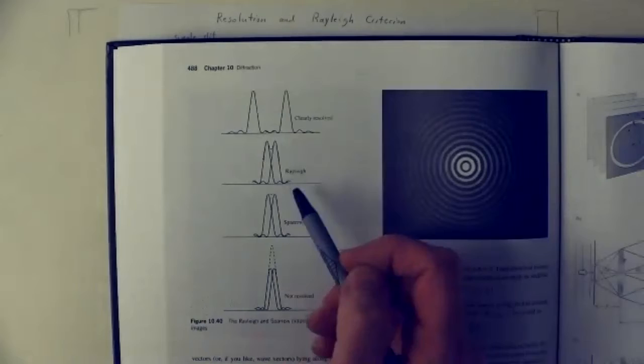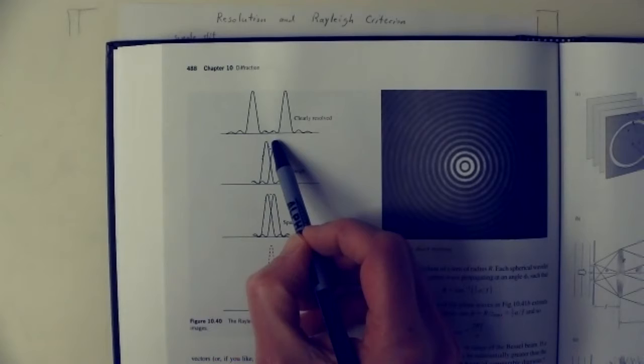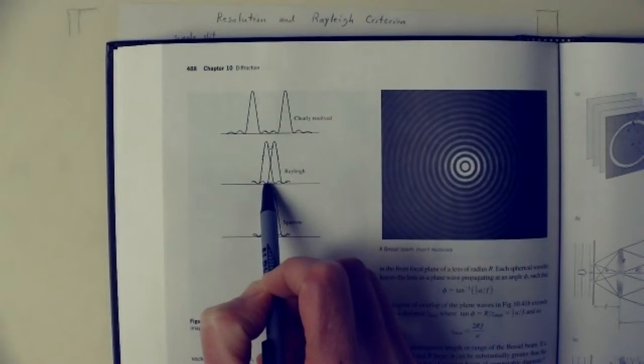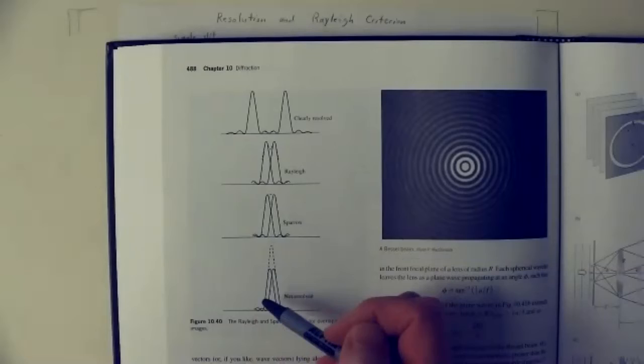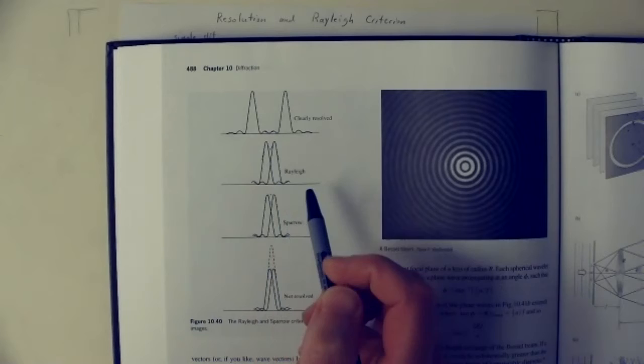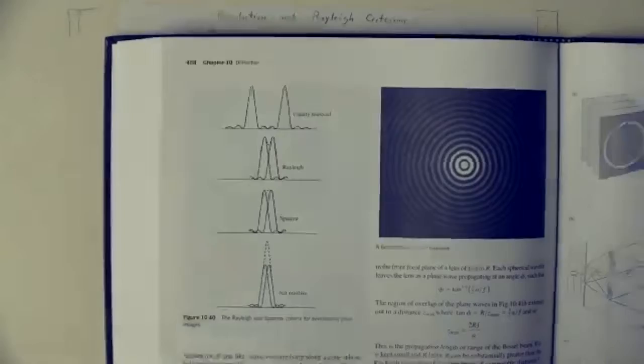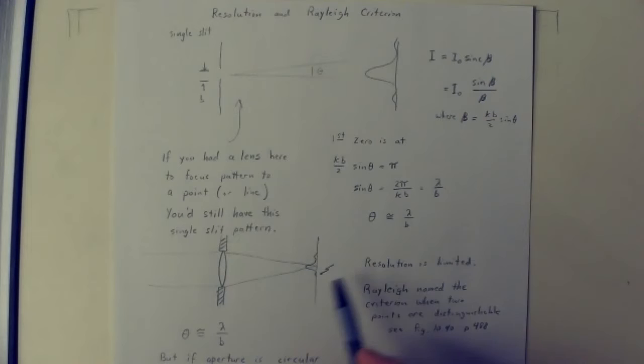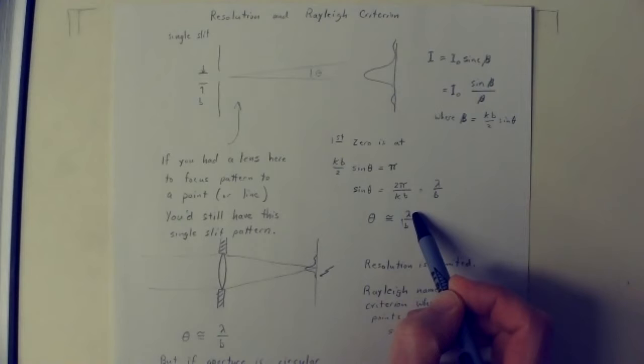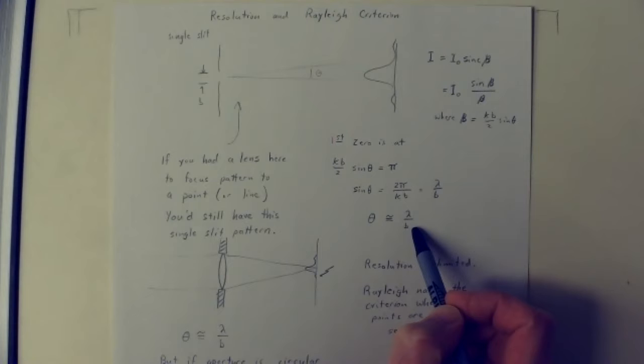The Rayleigh criterion is the easiest to work with, so it's the one everyone uses. It states that when the peak of the diffraction pattern of one source falls right at the first minimum of the other, that is the limit of resolution. Put them closer than that and you can't tell they're two stars. It's actually slightly pessimistic — you can do a little better — but it's hardly worth calculating, so people use Rayleigh's criterion. For a slit system, the angular resolution θ depends on the wavelength and the width of the slit.